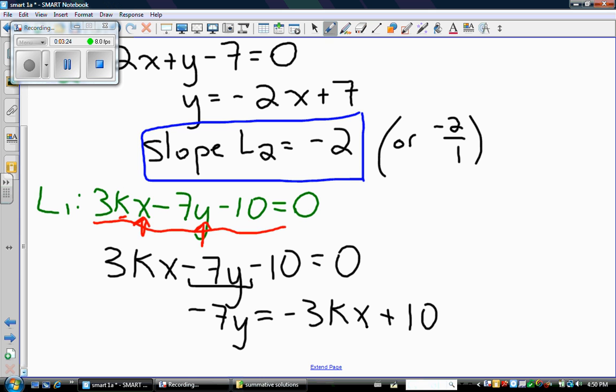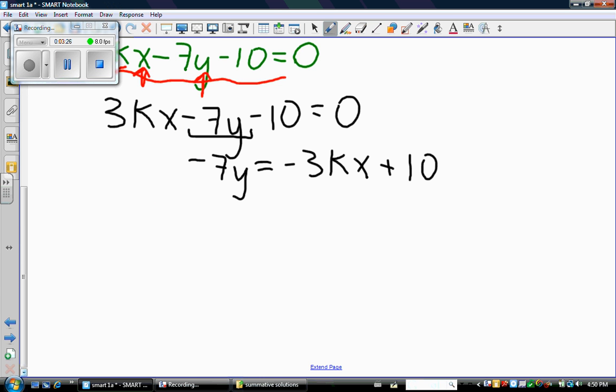Keep going. I need to isolate that y. So my next step will be divide everything by negative 7. And now cleaning this up, I have y equals 3k over 7x minus 10 over 7. So again, that k is just a number. So that's why I treated it like a number. 3 times k divided by 7.